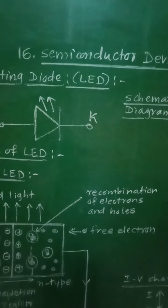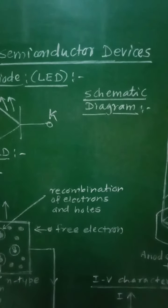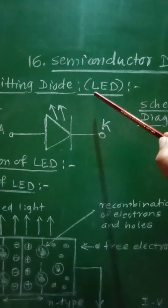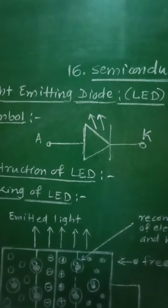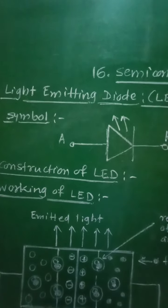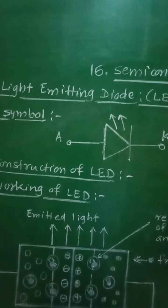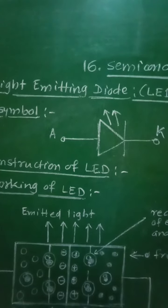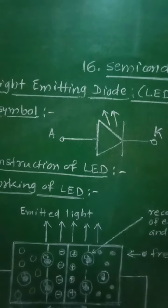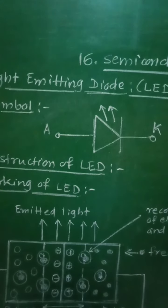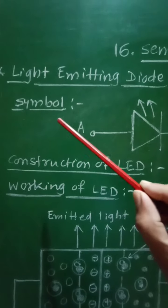In Class 12 Physics, Chapter 16 on semiconductor devices, we will study the light emitting diode, in short called LED. The light emitting diode is a PN junction diode which emits light when a large forward current passes through it. It converts electric energy into light energy. The symbol and schematic diagram of the LED are as shown.